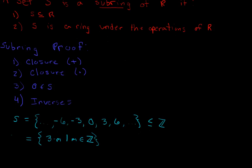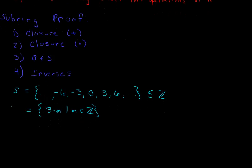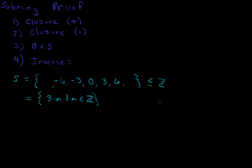There are four things we need to show that this is a subring of ℤ: we need to show closure under addition, closure under multiplication, we need to know whether or not the zero of the integers is also an element of this set, and we need to show that each element in this set has its additive inverse also in this set.